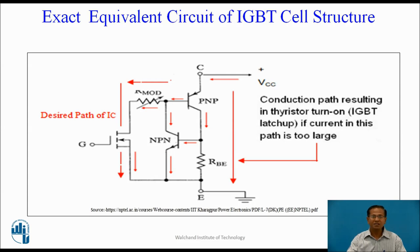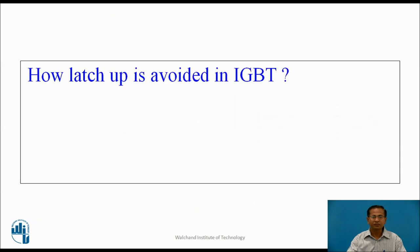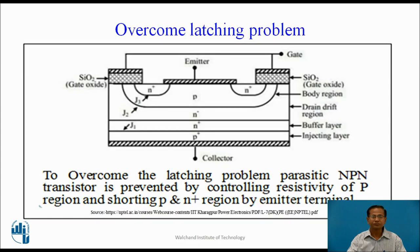This is the exact equivalent circuit of the IGBT cell structure. When voltage is applied across the collector with respect to emitter, current flows from collector to emitter. Because of this, the parasitic thyristor gets latched into the conducting state and the gate loses control over the device. That is why it is essential to avoid latching. To overcome the latching problem, the parasitic NPN transistor is prevented by controlling the resistivity of the P body region and shorting the P and N-plus regions via the emitter terminal, so latching is avoided.